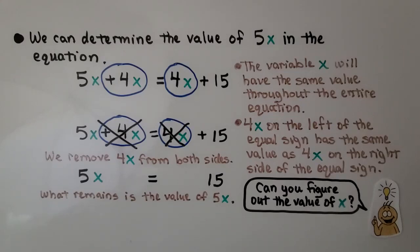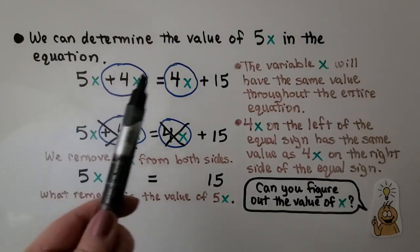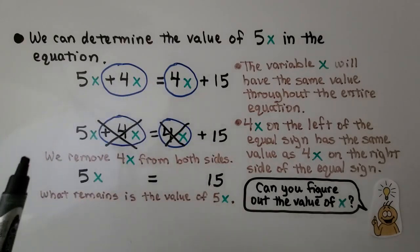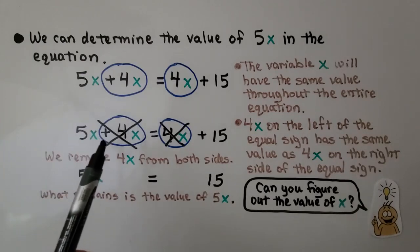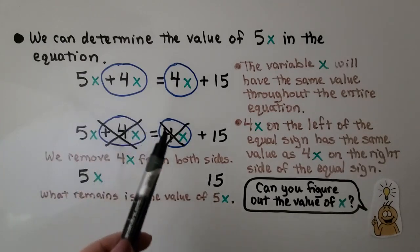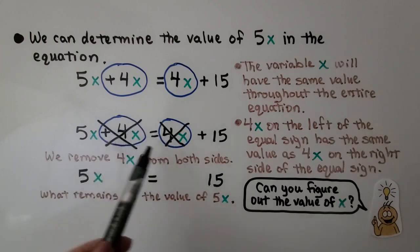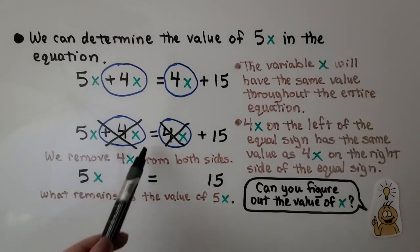We can determine the value of 5x in the equation. The variable x will have the same value throughout the entire equation. And 4x on the left of the equal sign has the same value as 4x on the right side of the equal sign. We remove 4x from both sides and we're left with 5x is equal to a positive 15.